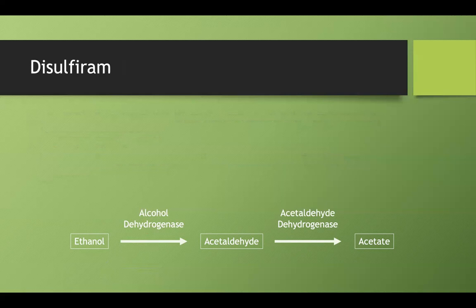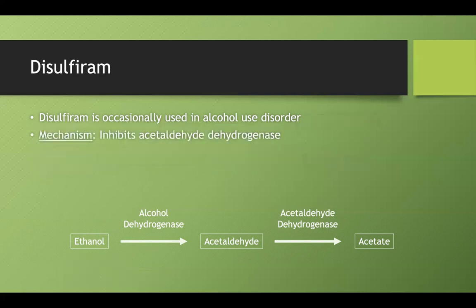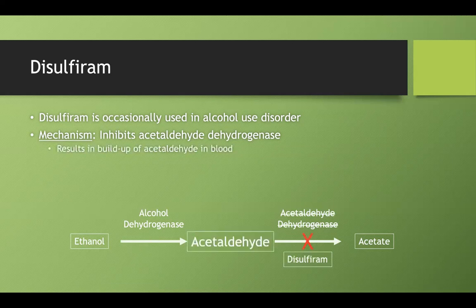Disulfiram can be used in alcohol use disorder. It inhibits acetaldehyde dehydrogenase — the other enzyme in this pathway. If you inhibit this, you get a buildup of acetaldehyde in your blood, and high acetaldehyde levels feel very bad.